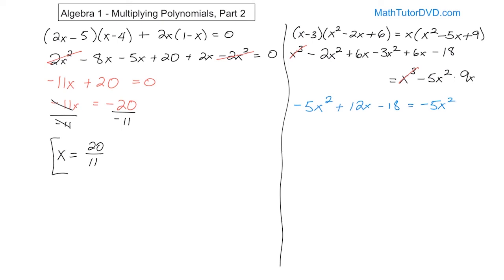On the right we also have plus 9x. We have exactly the same term — negative 5x squared — on both sides, so we can cancel them: adding 5x squared to both sides makes them zero and they disappear. All that remains on the left is 12x minus 18, and on the right is 9x.